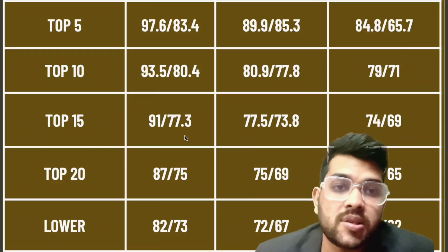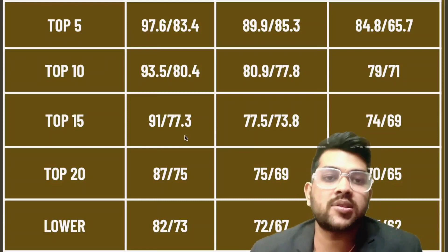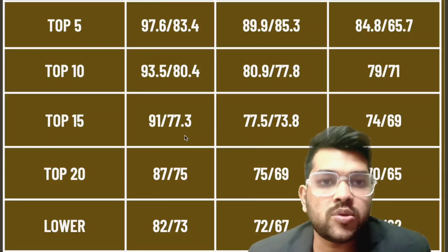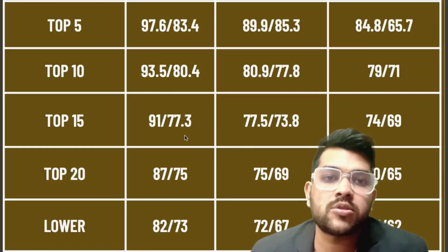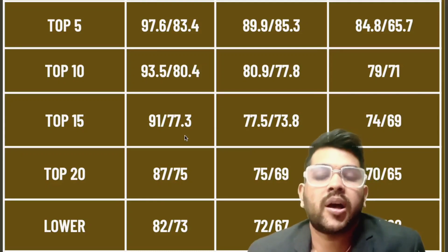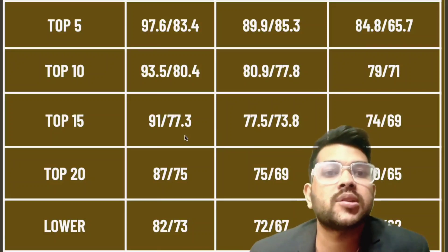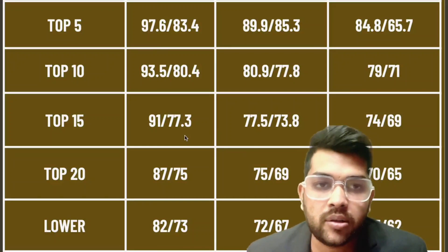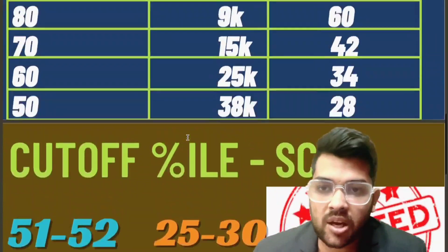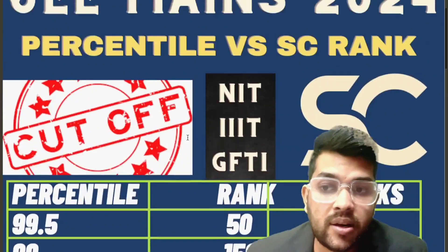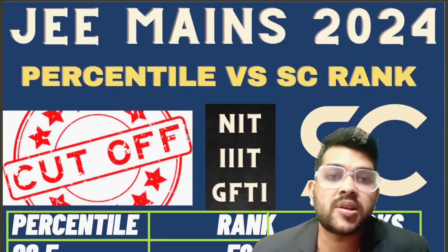For any NIT college, 82 percentile for CSE and 73 for lower. For any Triple IT, 72 and 67. For any GFTI, 65 and 62. So at least 62 percentile is needed to get a college in JOSAA counseling. After JOSAA there will be CSAB counseling — you will get more information on those by subscribing the channel. Thanks for watching. Please subscribe and don't forget to subscribe my Hindi channel, Admission Academy.